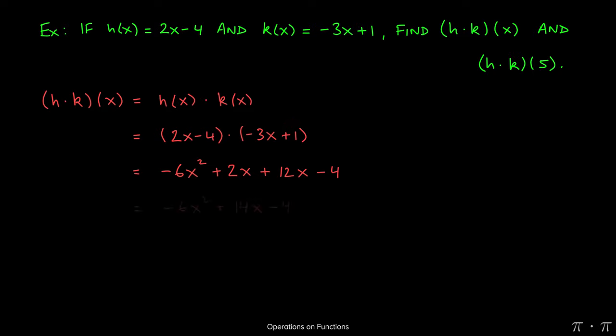Now at this stage we can recognize that there are like terms, the 2x and the 12x. Those two add up to give us 14x, and the -6x² and the -4 just come along for the ride. They don't have like terms with them.